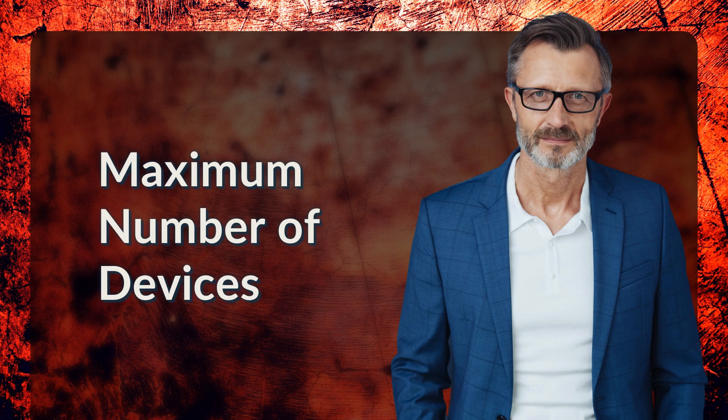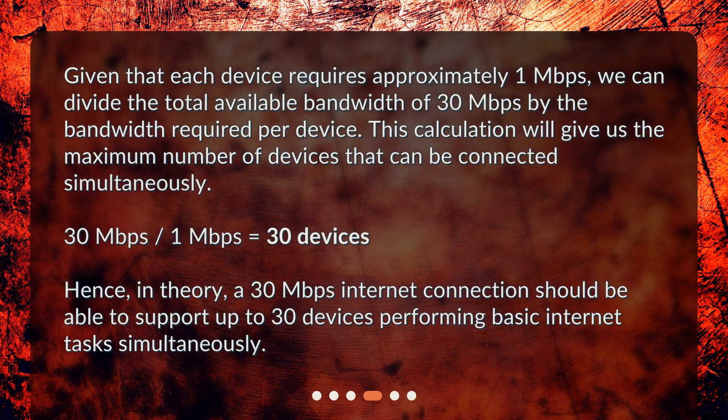Maximum number of devices. Given that each device requires approximately 1 megabit per second, we can divide the total available bandwidth of 30 megabits per second by the bandwidth required per device. This calculation will give us the maximum number of devices that can be connected simultaneously. 30 megabits per second divided by 1 megabit per second equals 30 devices. Hence, in theory, a 30 megabits per second internet connection should be able to support up to 30 devices performing basic internet tasks simultaneously.